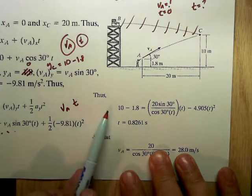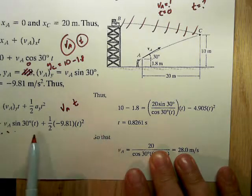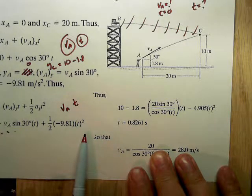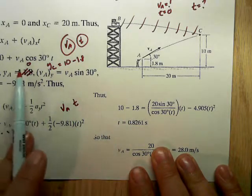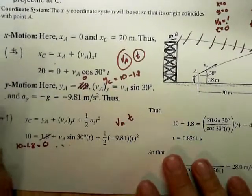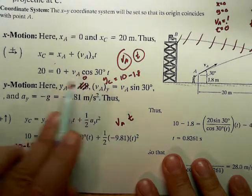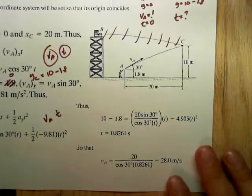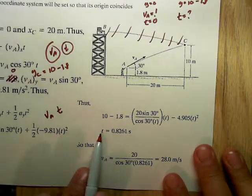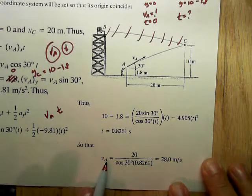Given this equation over here, what they did was they took the first equation and solved it for VA as a function of t and plugged it into this equation. That's just algebra, we're not going to sweat the algebra that they did. You can do algebra. t turns out to be 0.82 seconds and VA is 28 meters per second.